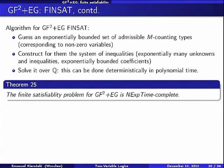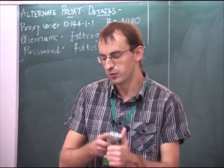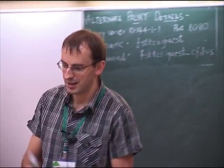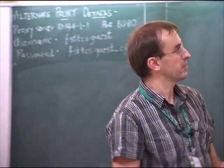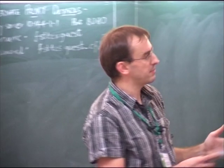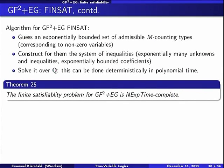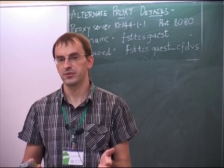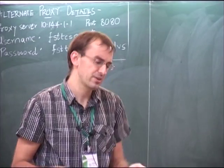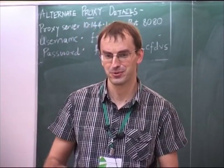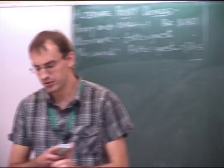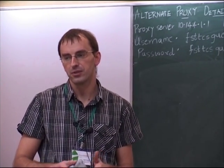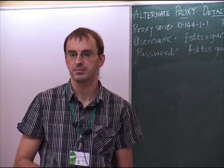Our algorithm: we guess the set of one-types and the set of M-counting types corresponding to non-zero variables, then construct the system using only those variables — a system with 2^n equations and 2^n variables. We solve it, all in exponential time.